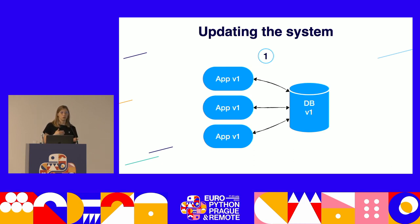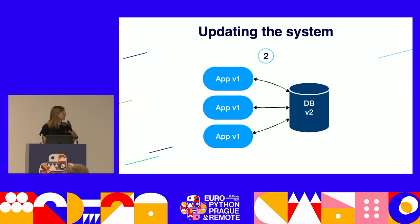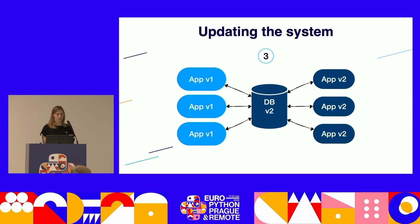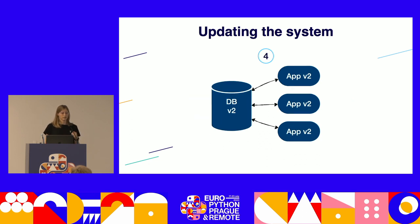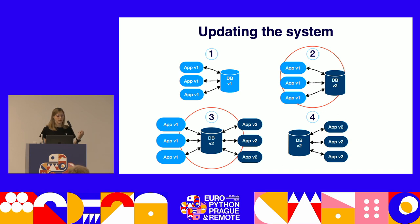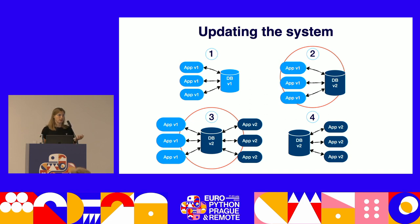Upgrading app instances is easy — we just gradually replace all app instances with new ones. The problem is with the database because it's a shared resource and we cannot just clone and replace it. Instead we upgrade the database in place. First we migrate the database to version V2, leaving app instances on the previous version. Once migrations are completed we start app workers of version V2, and finally stop app workers of the previous version. The two stages we should worry about are stages 2 and 3, where we have an upgraded database but still running app workers from the previous version — old code using an upgraded database.